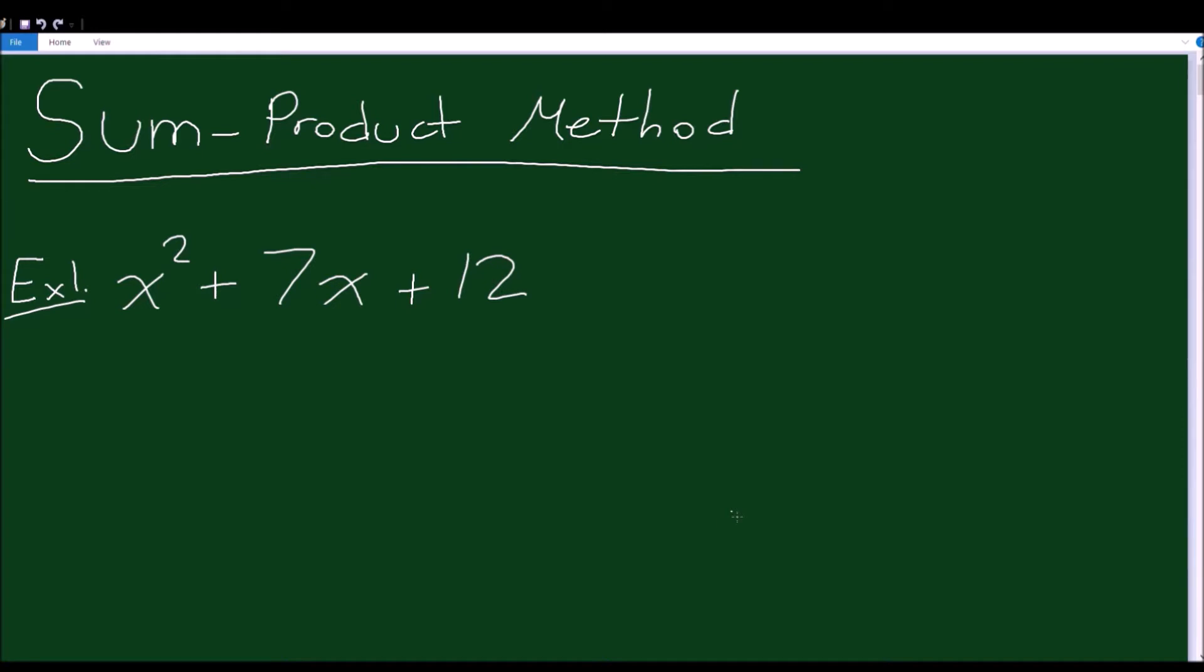Today we're going to be covering the sum-product method for factoring. Example one: x² + 7x + 12. So here we have a trinomial where the coefficient on the first term, the x², is one. That means we can use the sum-product method. Whenever you have x² plus a number x plus a number, you can usually use the sum-product method. So what does the sum-product method entail?